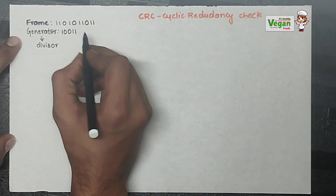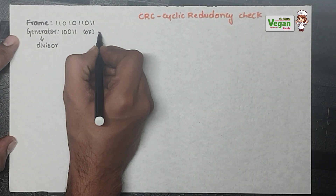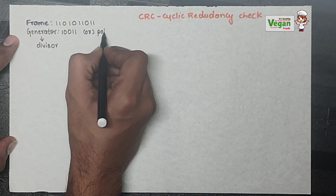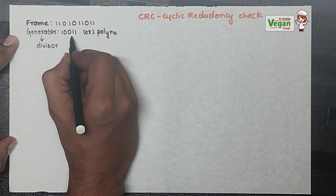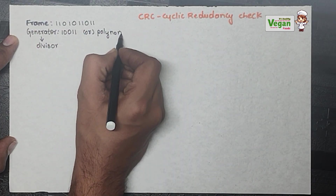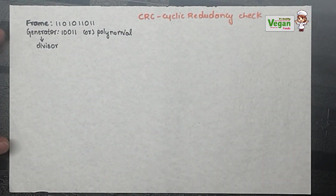If the generator is given in polynomial form, we must first convert it into binary form and then start proceeding with the problem.